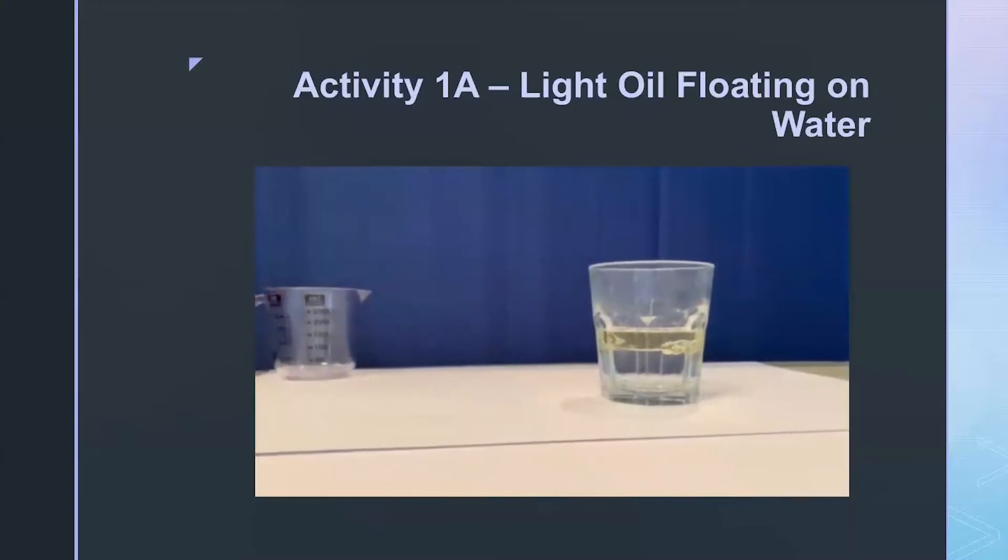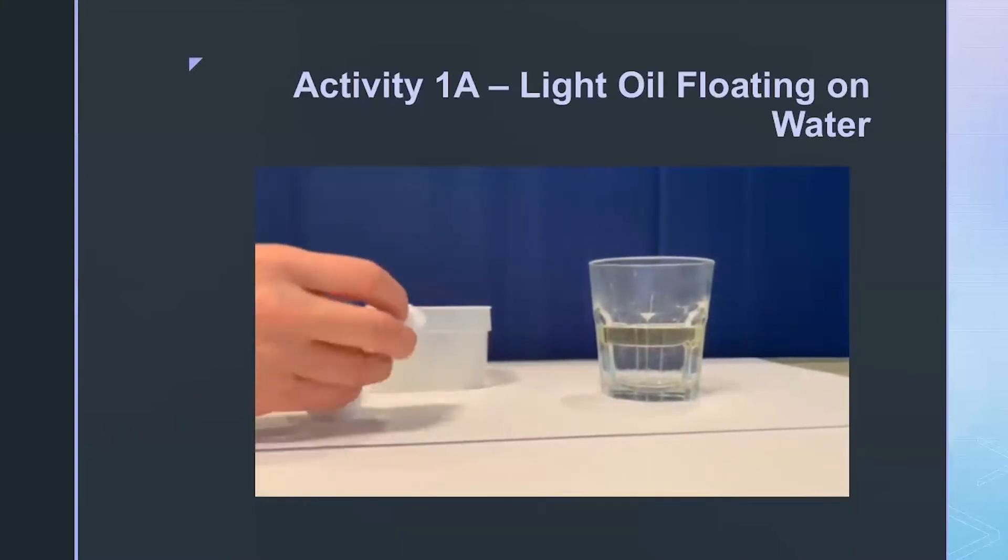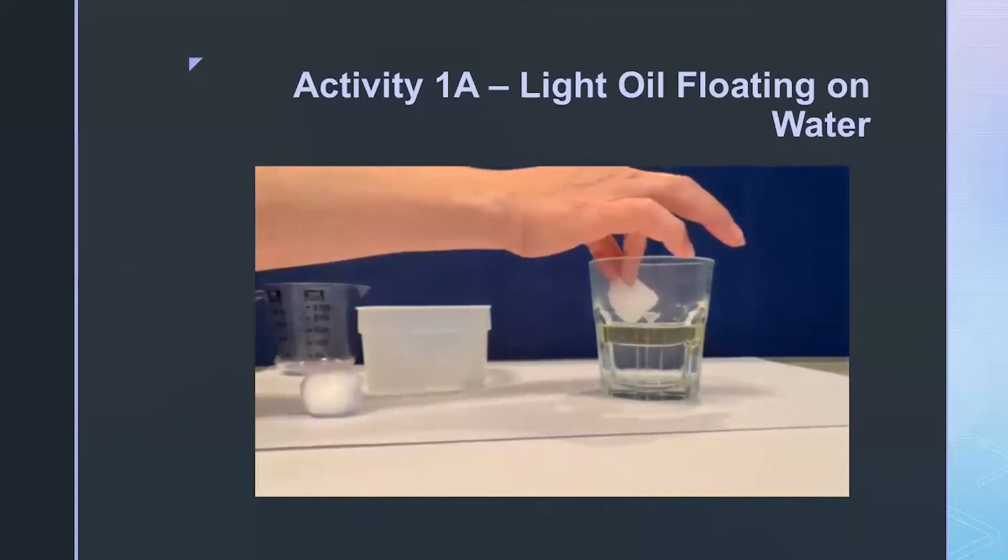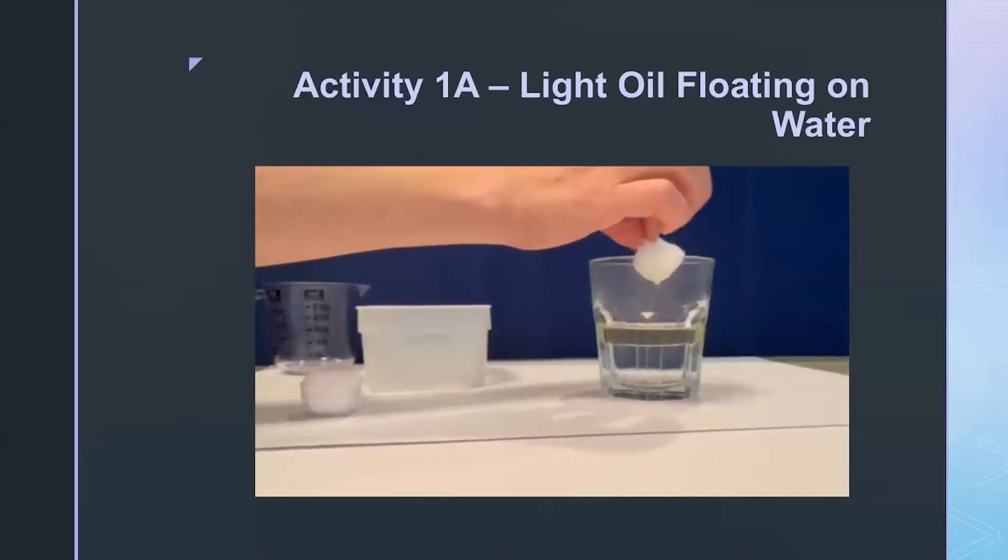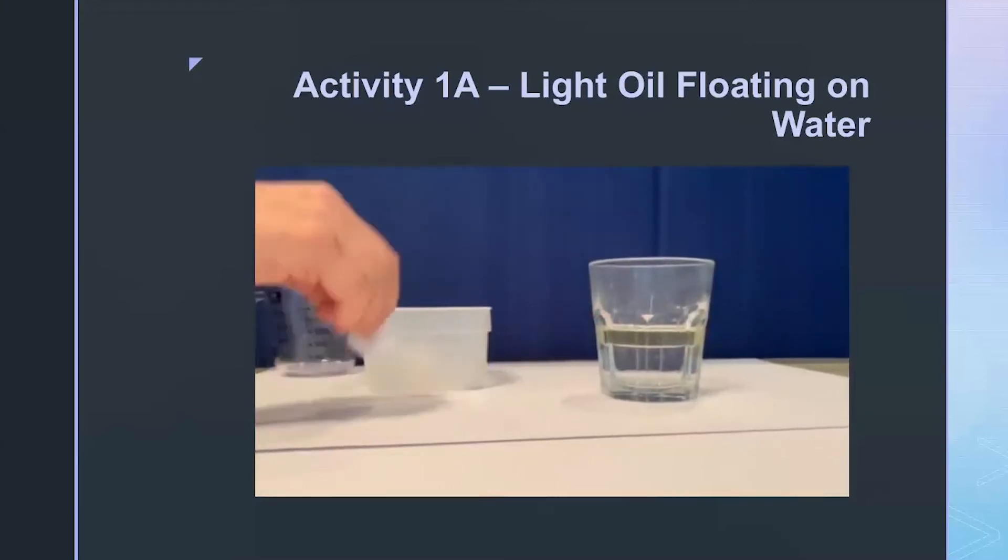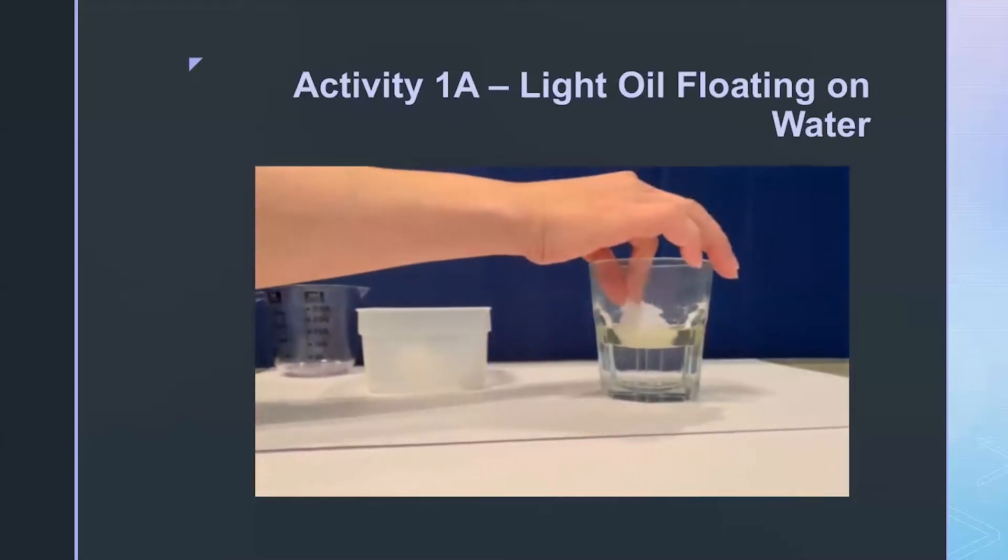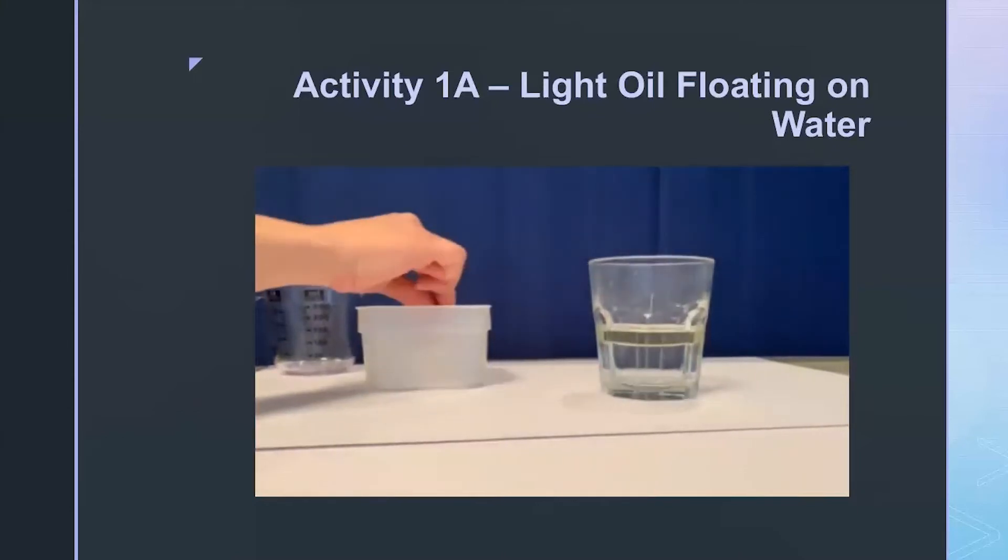Now removing that is not that difficult. You can skim it, or you can collect it using an adsorbent. In this activity, we're going to use cotton balls, which are really a good adsorbing material. You will take the cotton ball and gently insert it into the oily layer. And as it fills up with oil, you can throw it away, get another one, and continue to skim the oil off the surface.